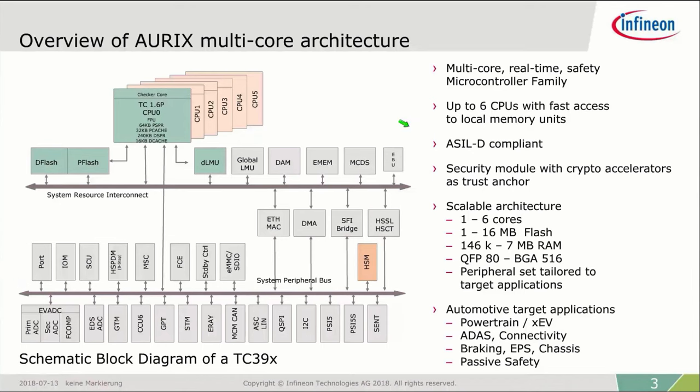All derivatives are ASIL-D compliant via lockstep or checker cores, and by other comprehensive hardware mechanisms to detect or avoid failures. There is also a hardware security module as a trust anchor, with its own processor and crypto accelerators, a true random generator, secured memory for key storage, and firewall protection. Aurix is also known as a scalable architecture — it scales over cores, package, and peripherals tailored to various applications.